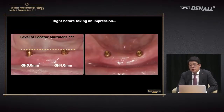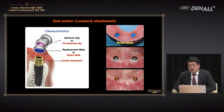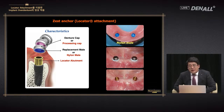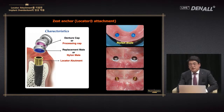What is the appropriate gingival height for locator attachment? The locator attachment is connected to the implant, and the nylon mail provides the retentive force within the processing cap — it is connected via the snap-on method. The denture base is in contact with the processing cap.